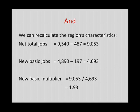We can now recalculate new statistics for the area. Total jobs: 9,540 − 487 = 9,053 jobs. New basic jobs: 4,890 − 197 = 4,693 basic jobs. And we recalculate a new basic multiplier: 9,053 total jobs divided by 4,693 basic jobs equals a new multiplier of 1.93.